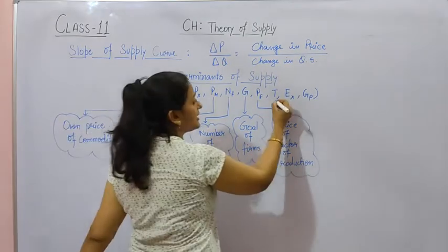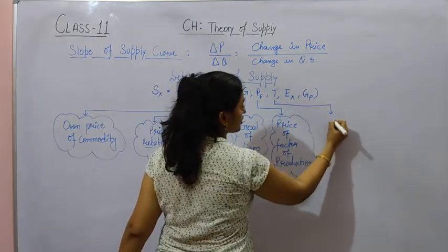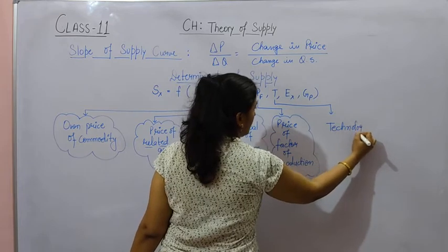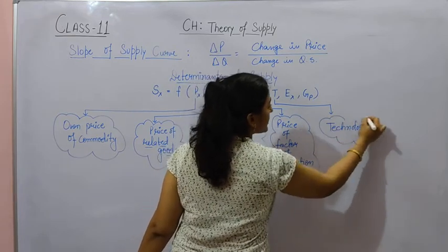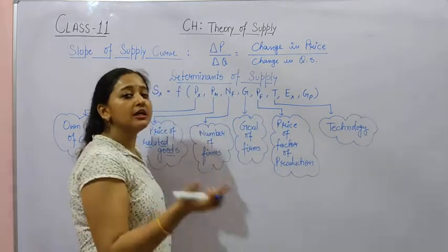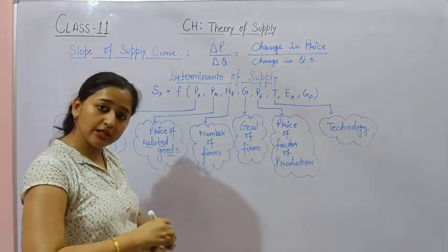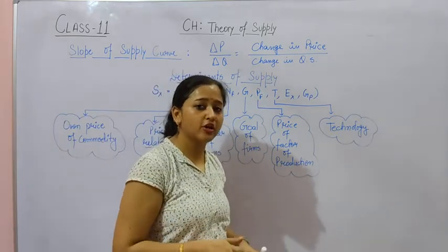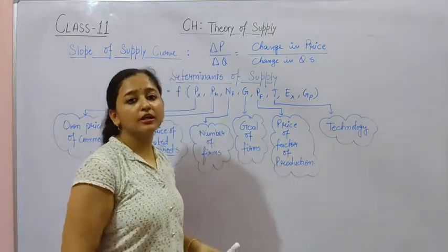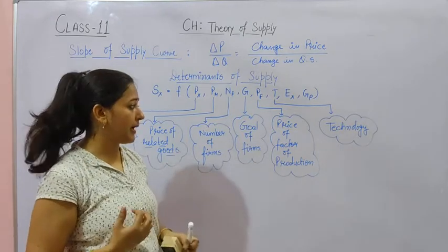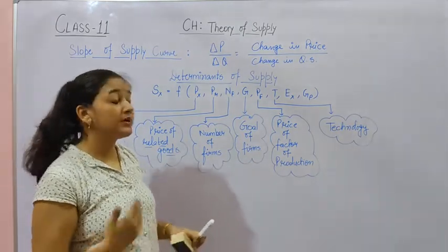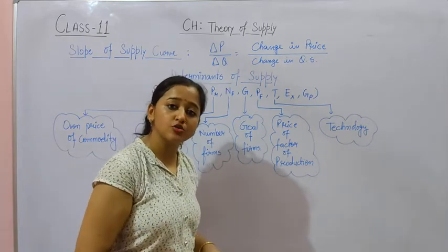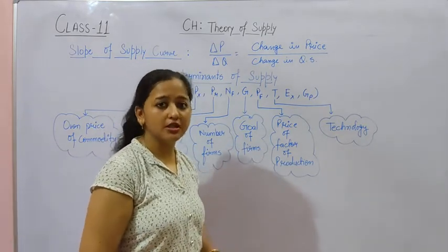Next, T represents technology. If there is an improvement in technology, then supply will also increase. If we are using the same conventional technology, it will not increase our supply and there will be limited supply. So if there is advancement in technology, supply will increase.